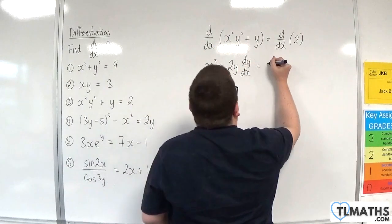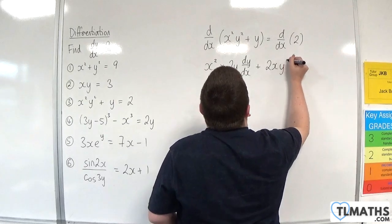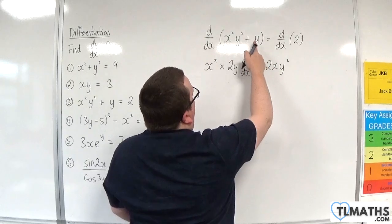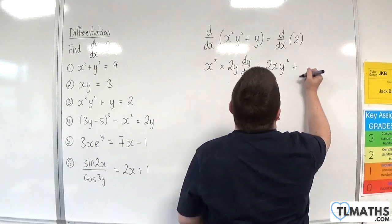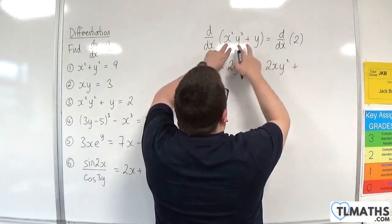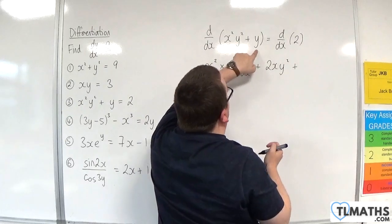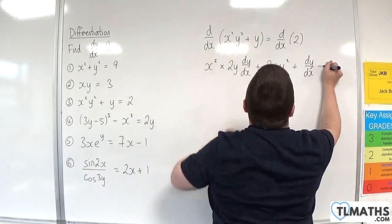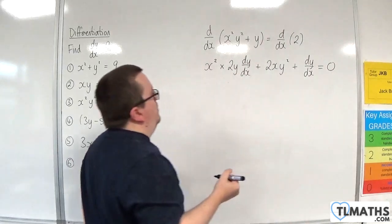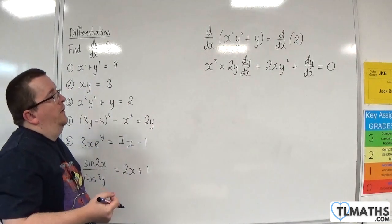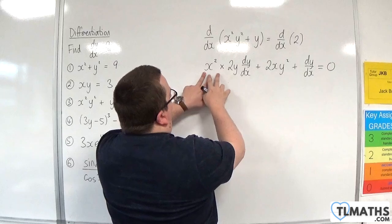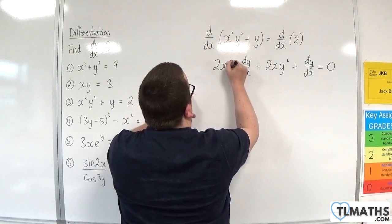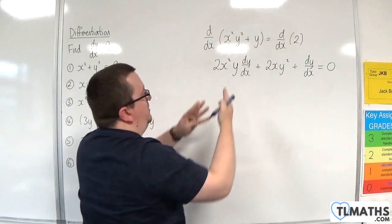x squared differentiates to 2x, so we get 2x times y squared. Then we differentiate y with respect to x, which is dy by dx. The right-hand side differentiates to 0. Tidying up, that gives 2x squared y times dy by dx from combining terms.